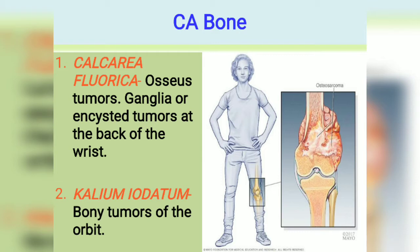One is Calcarea Fluorica, which we already use in different types of benign tumors. Here it is used for ganglia and encystic tumors at the back of the wrist, and different types of bone tumors. The next one is Calcarea Iodatum — again for bony tumors of the orbit, so it especially acts on the bones of the orbit.